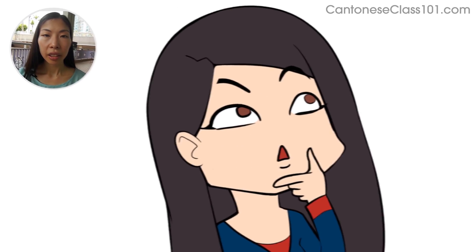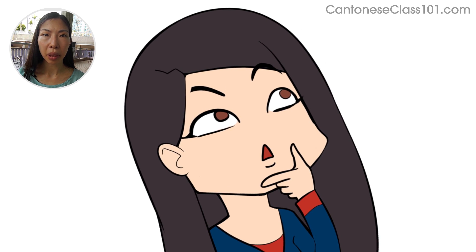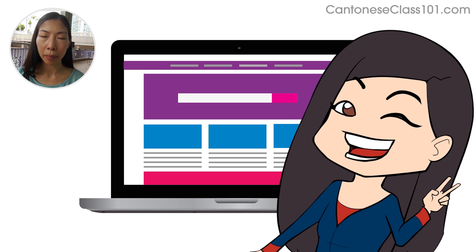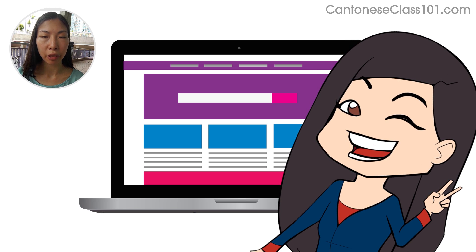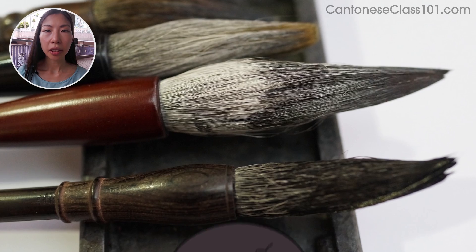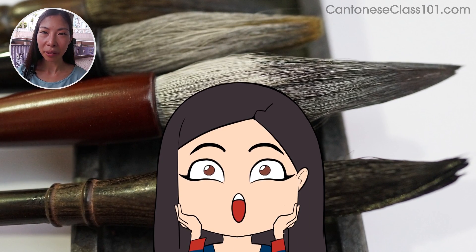Next is the importance of stroke order when learning how to write Chinese characters. Stroke order is important because it helps you remember the character faster and is necessary for typing Chinese when using certain Chinese input methods for computers. It also helps you write calligraphy correctly and beautifully.